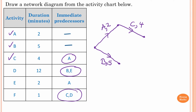We don't know where E is yet, so we skip D for now and move to activity E. A is a predecessor of E, and since activity E and B join together, this is E with a weighting of two. Now we can go back to activity D — B and E are immediate predecessors — and connect to the vertex shared with C. Activity D has a weighting of 12.